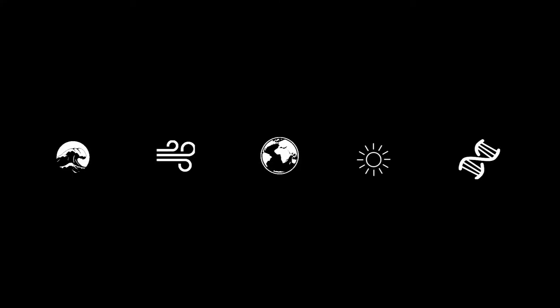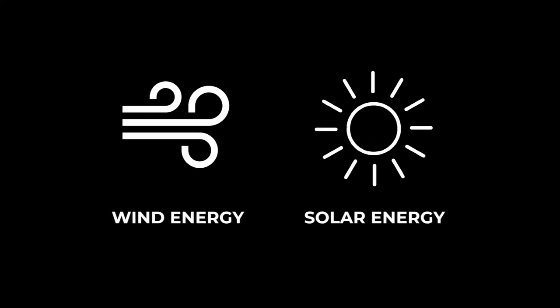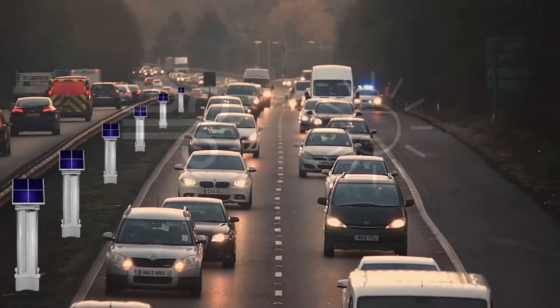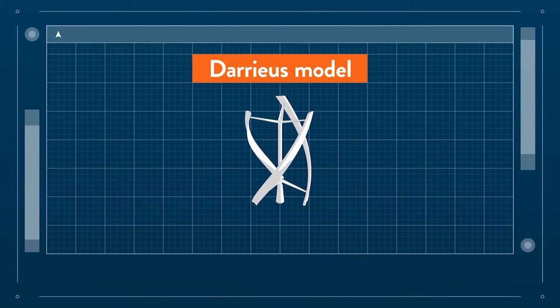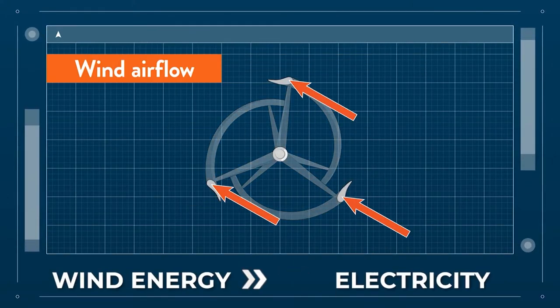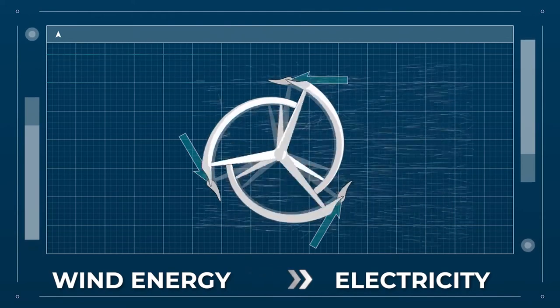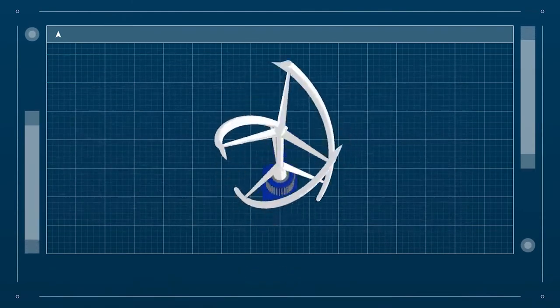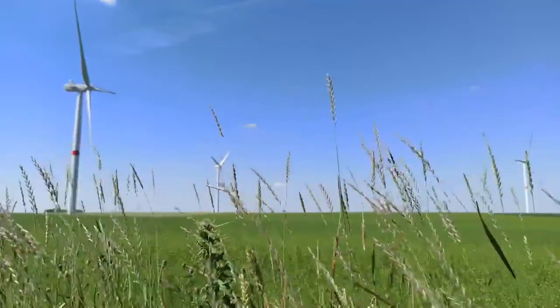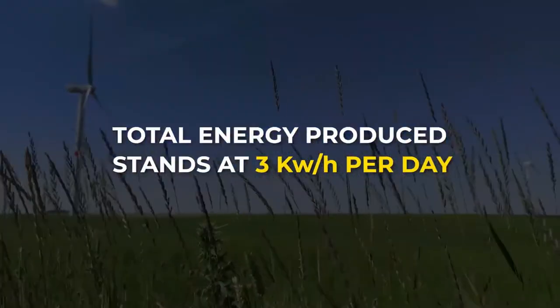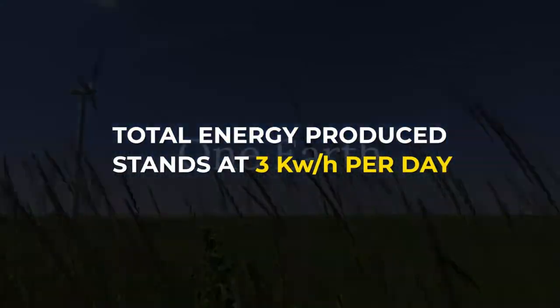We utilize two major energy sources: wind and solar energy. Wind energy is utilized through our vertical axis wind turbine that captures the wind's power and converts it to electricity. Therefore, the total produced energy by our product in a day from both solar and wind energy stands at 3 kilowatt hour per day.